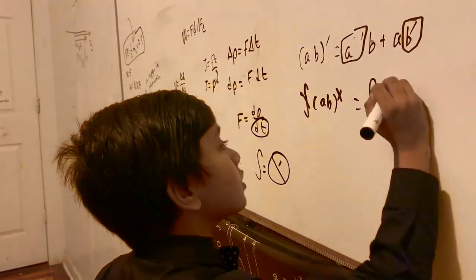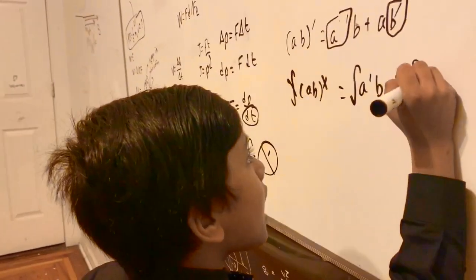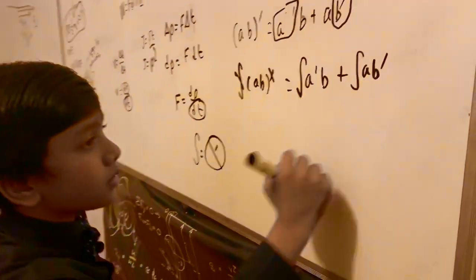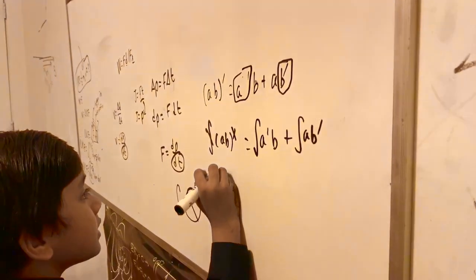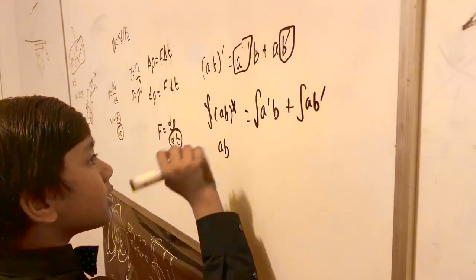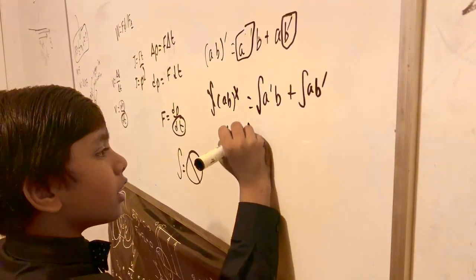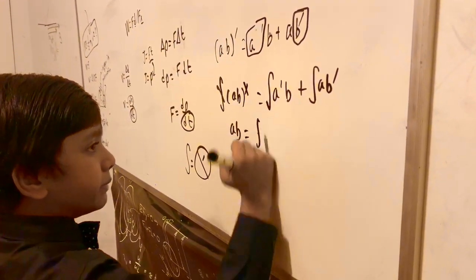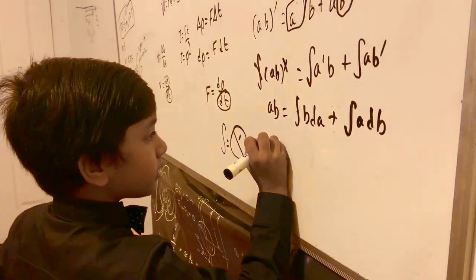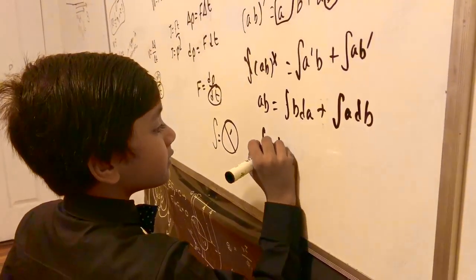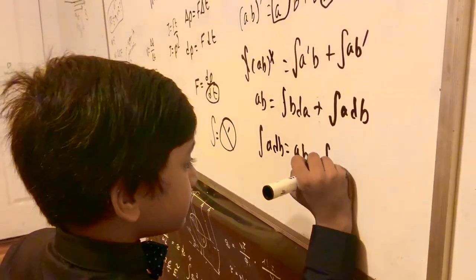It's unbreakable. So now, that gives us a b prime is equal to a integral of b d a. So now, that gives us integral of a d b is equal to a b minus b d a.